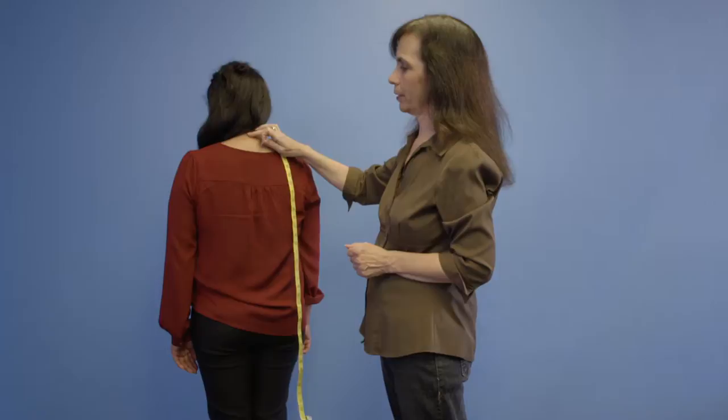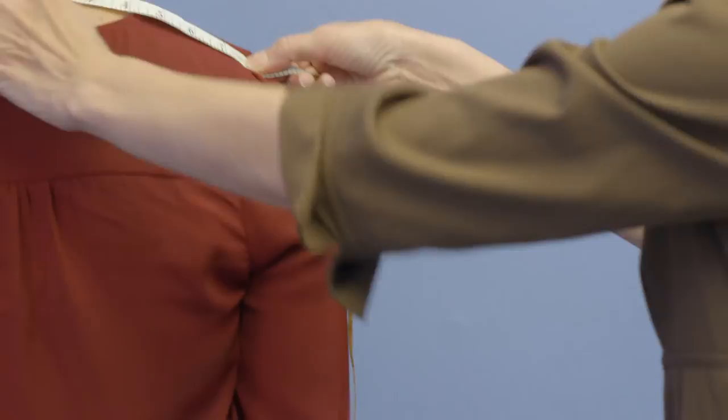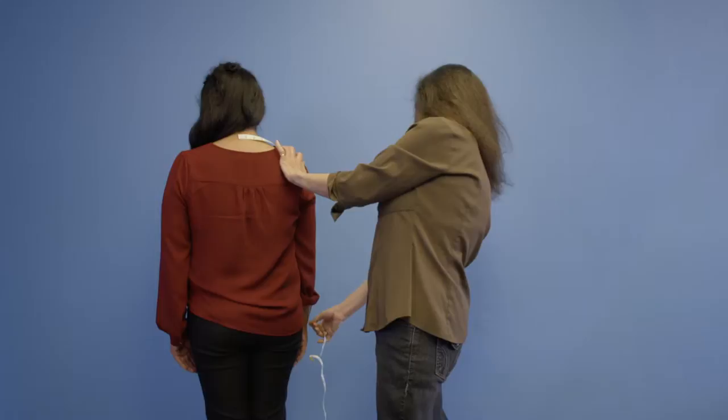You're going to go to the top of the spine where the large bump is at the nape of the neck and put the tape there. Then you're going to go to the tip of the shoulder.